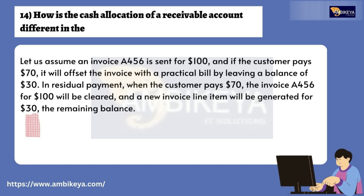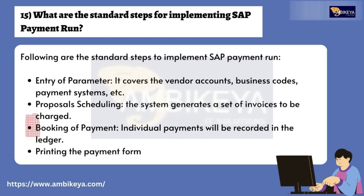Question number fourteen: How is the cash allocation of a receivable account handled? Let us assume invoice A456 is sent for 100. If the customer pays 70, it will offset the invoice with a partial payment, leaving a balance of 30. In residual payment, when the customer pays 70, invoice A456 for 100 will be cleared and a new invoice line item will be generated for the remaining balance of 30.